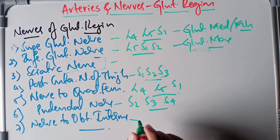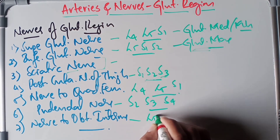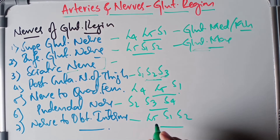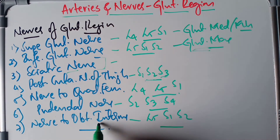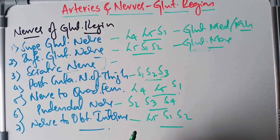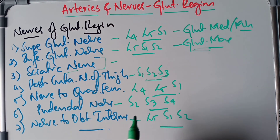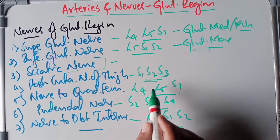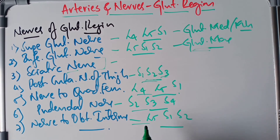The nerve to obturator internus arises from L5, S1, and S2 of the sacral plexus and supplies the obturator internus as well as the gemellus superior. This concludes the nerves of the gluteal region, covering their root values from the sacral plexus and the structures they supply. If you liked the video, make sure to subscribe — thank you.